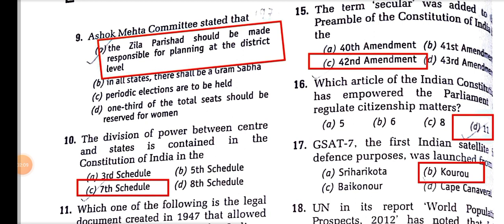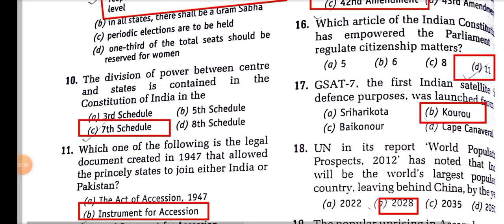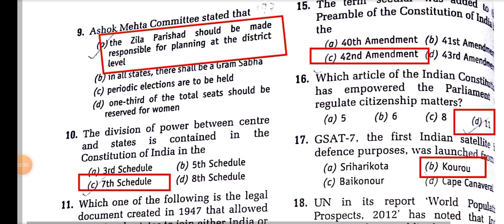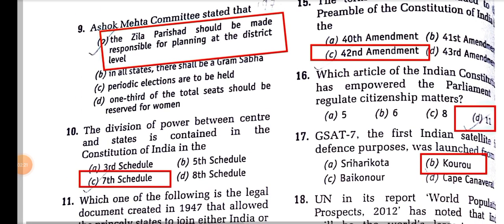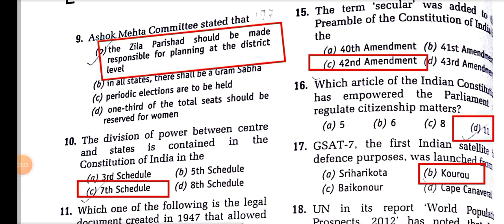This Ashok Mehta Committee was formed in 1977 for Panchayati Raj institutions or Democratic Decentralization. The division of power between Centre and States is contained in the Constitution of India in the 7th Schedule.